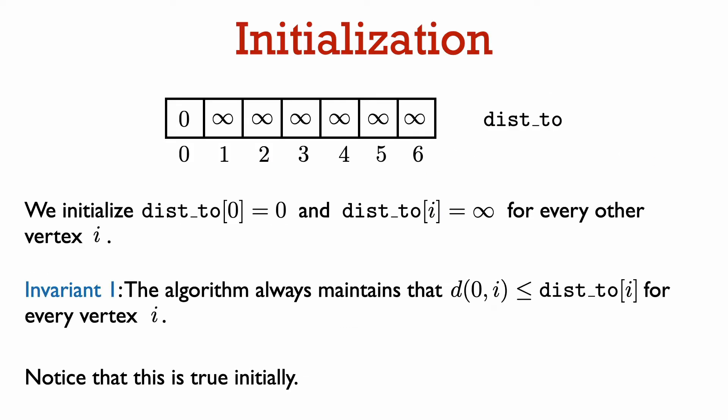Now let's get into a general template for a single source shortest path algorithm. We initialize the dis2 array so that dis2[0] is zero — remember that zero is our source vertex, so the distance from zero to zero is indeed zero. For every other vertex i, we initialize dis2 to be infinity.